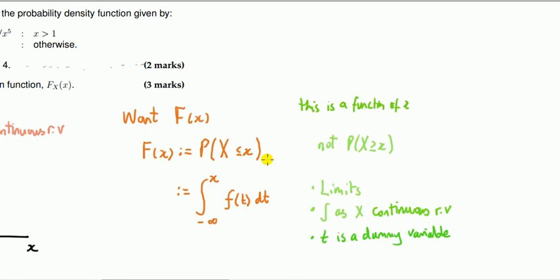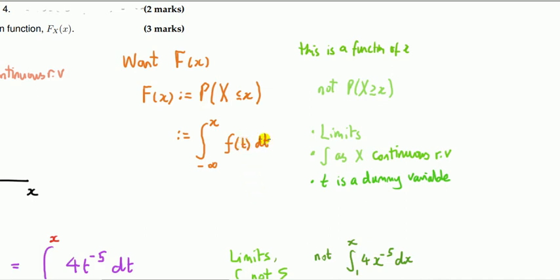By definition, the CDF is the area under the curve up to the point x. Be careful to get the limits right — put minus infinity as the lower limit since it's everything to the left. Also note the calculus notation: I use T instead of X as the dummy variable, because we have to distinguish between the variable changing value and the point at which we compute the function. You cannot have X be both the variable and the evaluation point.